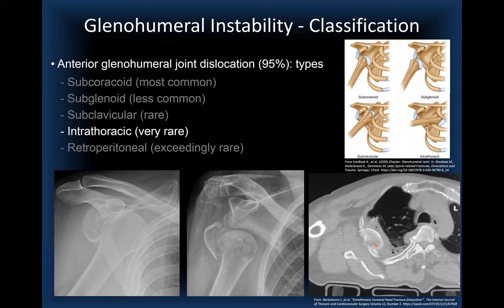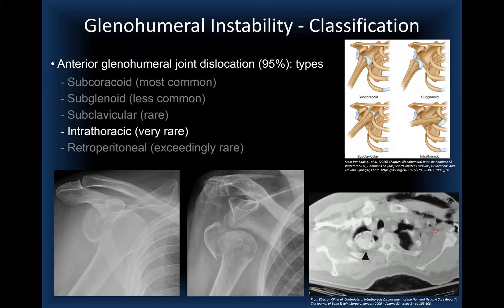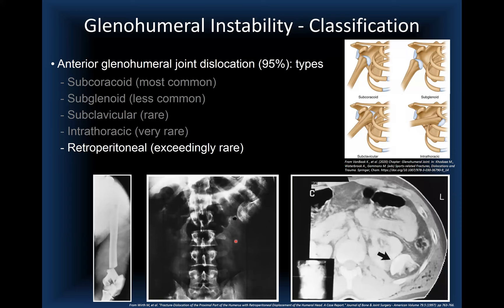Another extreme case from the literature shows a left proximal humerus dislocation with rib fractures, where the humeral head ended up as a rounded density in the contralateral right upper lung zone. CT demonstrates the path the humeral head traveled to reach the contralateral lung field. Remarkably, this patient survived. Another case shows the humeral head in the retroperitoneum adjacent to the left kidney.